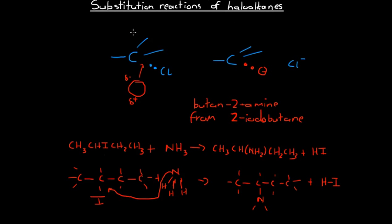Combining this with substitution reactions of alkanes, we can see a good two-step process for producing things like amines and alkanols from alkanes. We can replace a hydrogen with a halogen to create a haloalkane, and then from there we can replace the halogen with either an amine group or a hydroxyl group. That's how we can produce both amines and alkanols from haloalkanes.